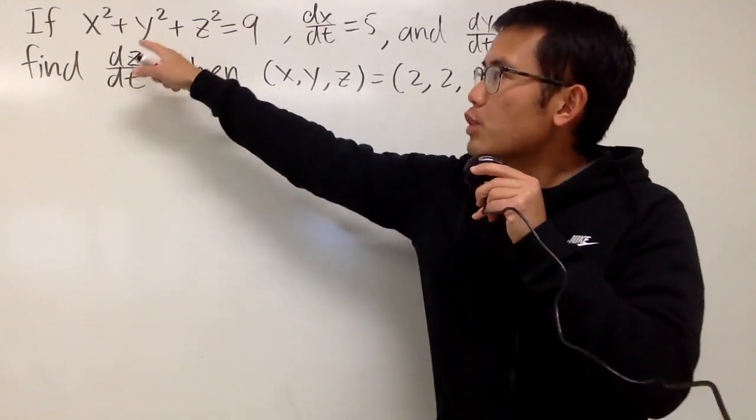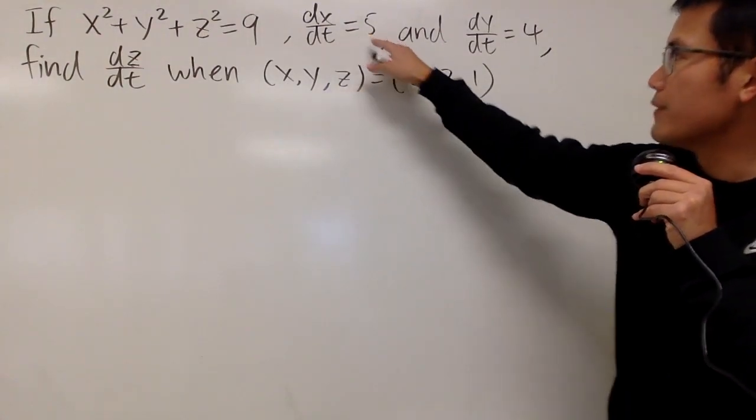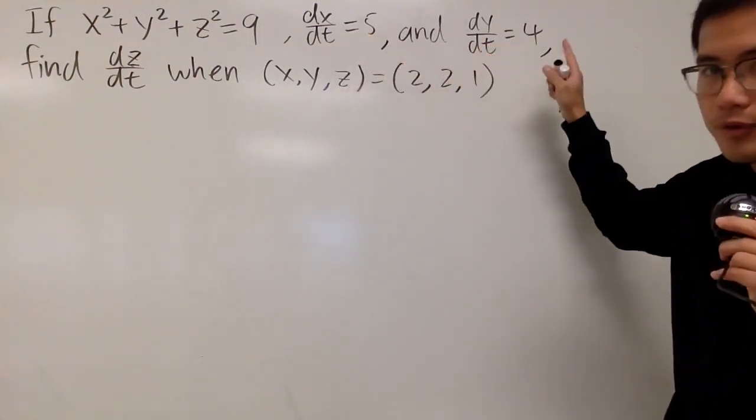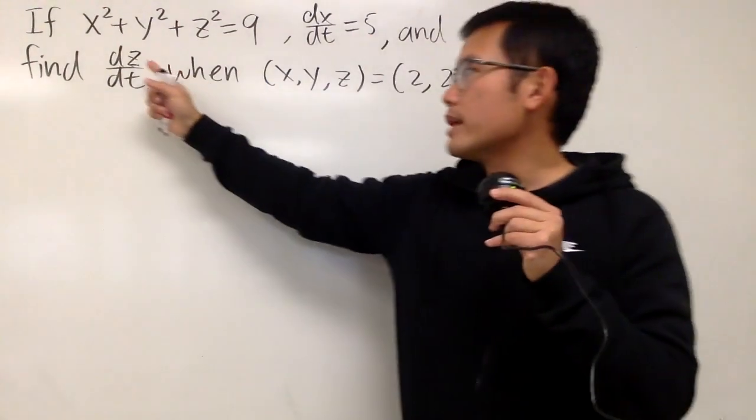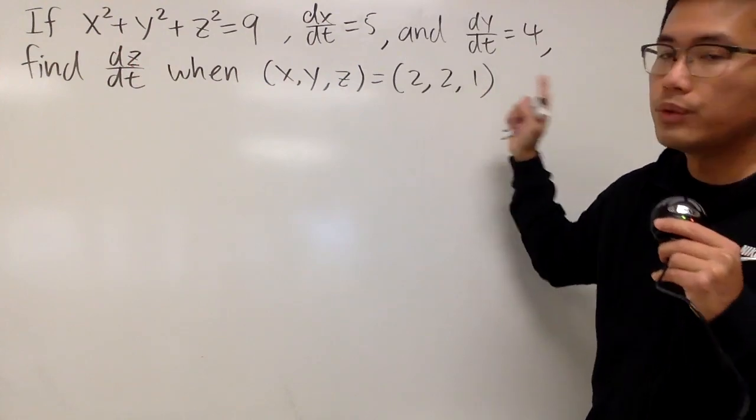Okay, so here we have this question: if x squared plus y squared plus z squared is equal to 9, and we know that dx/dt is equal to 5, and dy/dt is equal to 4, we will try to find out what the value is for dz/dt when the coordinate of x, y, z is 2, 2, and 1.